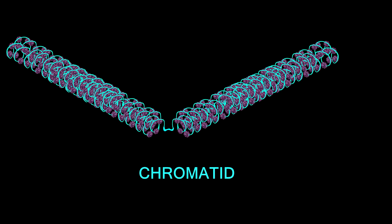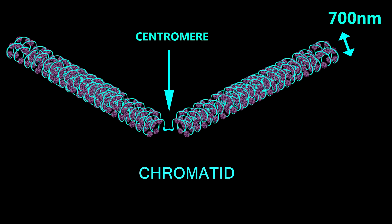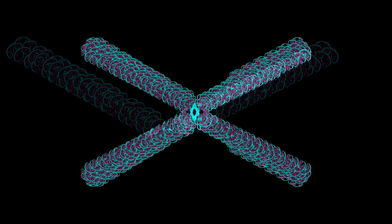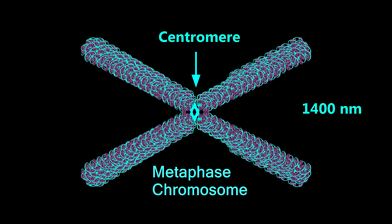In metaphase, this chromatid is highly condensed and makes a chromosome of width 1400 nanometers.